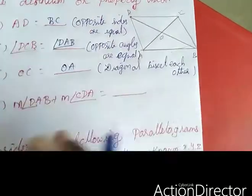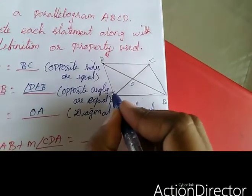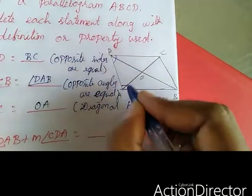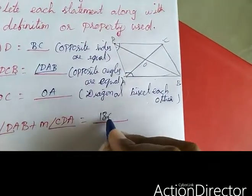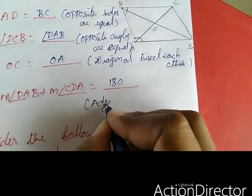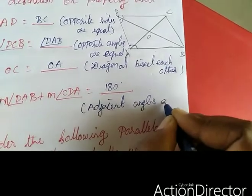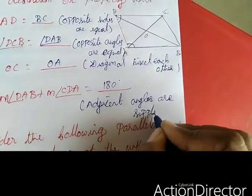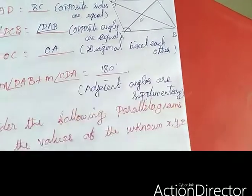Next, angle DAB plus angle CDA — if you add these two angles, what will you get? 180 degrees, by the property that adjacent angles are supplementary.